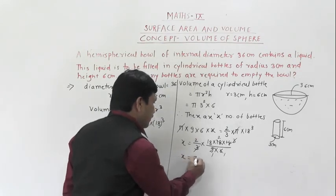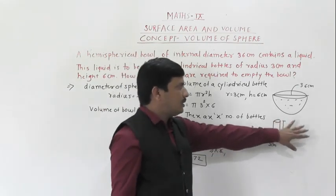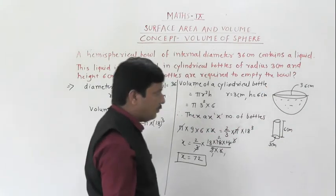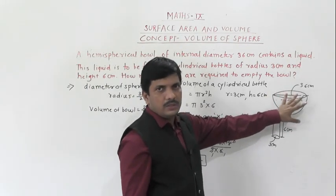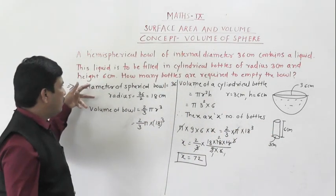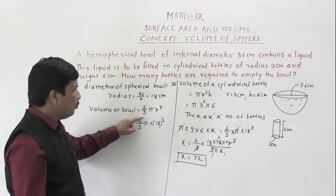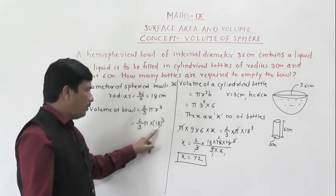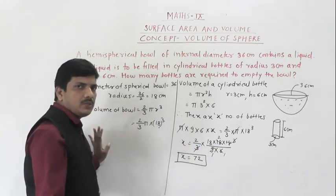So x equals 72. Therefore 72 bottles are needed to fill the liquid from this bowl. To summarize: we found the volume of the hemispherical bowl using 2/3 × π × r³ with r = 18. Diameter was given, so we converted it to radius. We kept values as is since things would cancel.